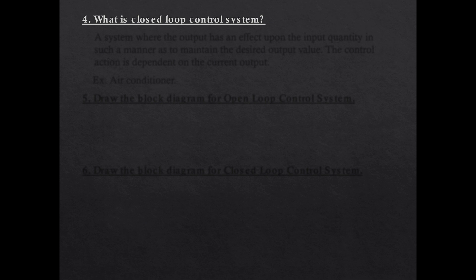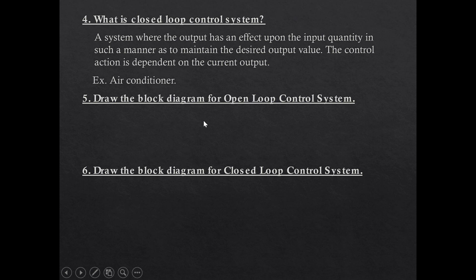What is a closed loop control system? A closed loop system is one where the output has a definite effect on the input in such a way that you can get the desired output. The control action is dependent on the current output. An example is an air conditioner — you set the temperature to 25 degrees, and once the room temperature reaches 25 it will stabilize and not cool further. This is the simplest example.